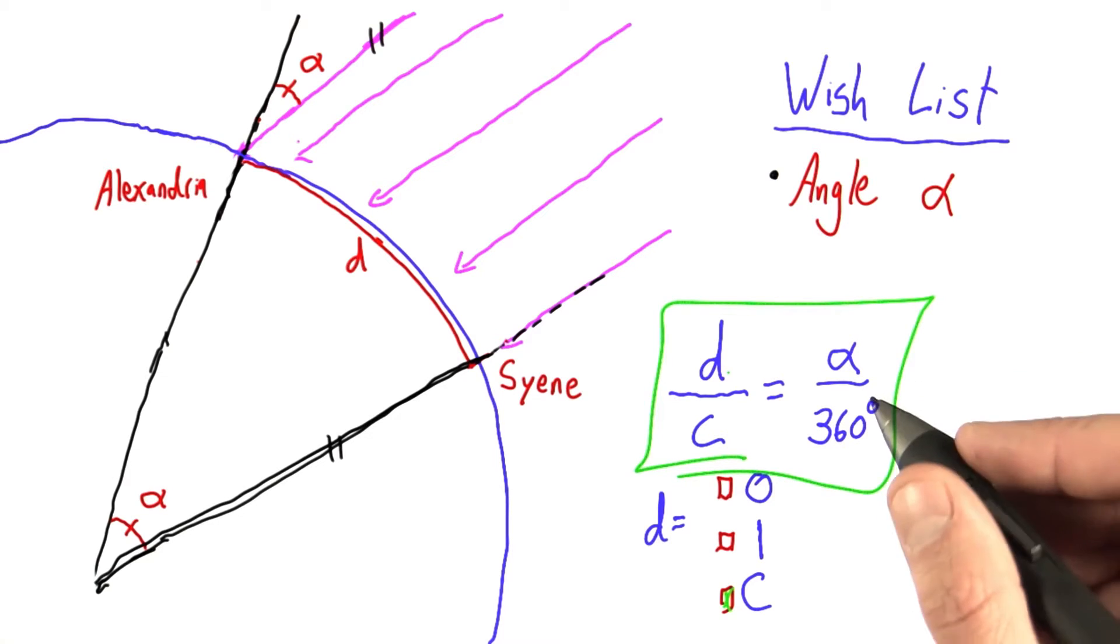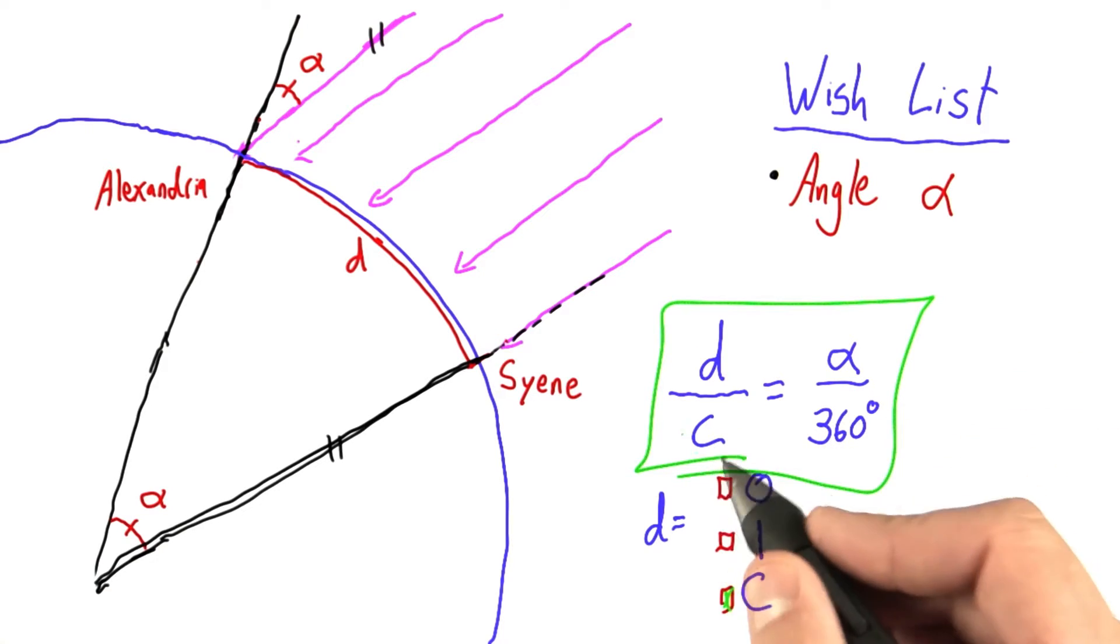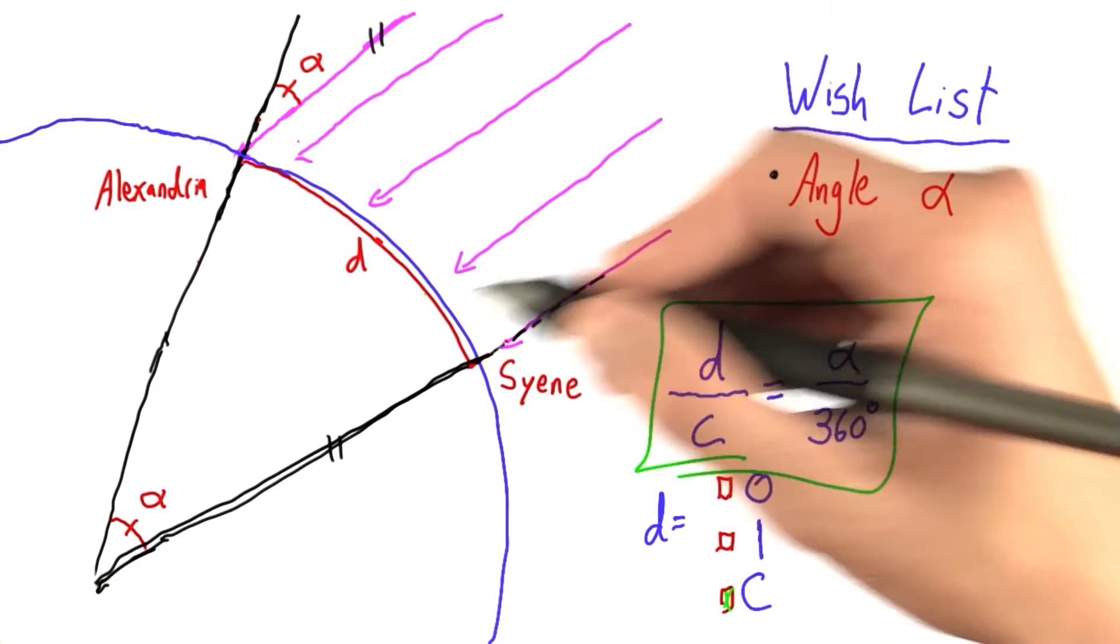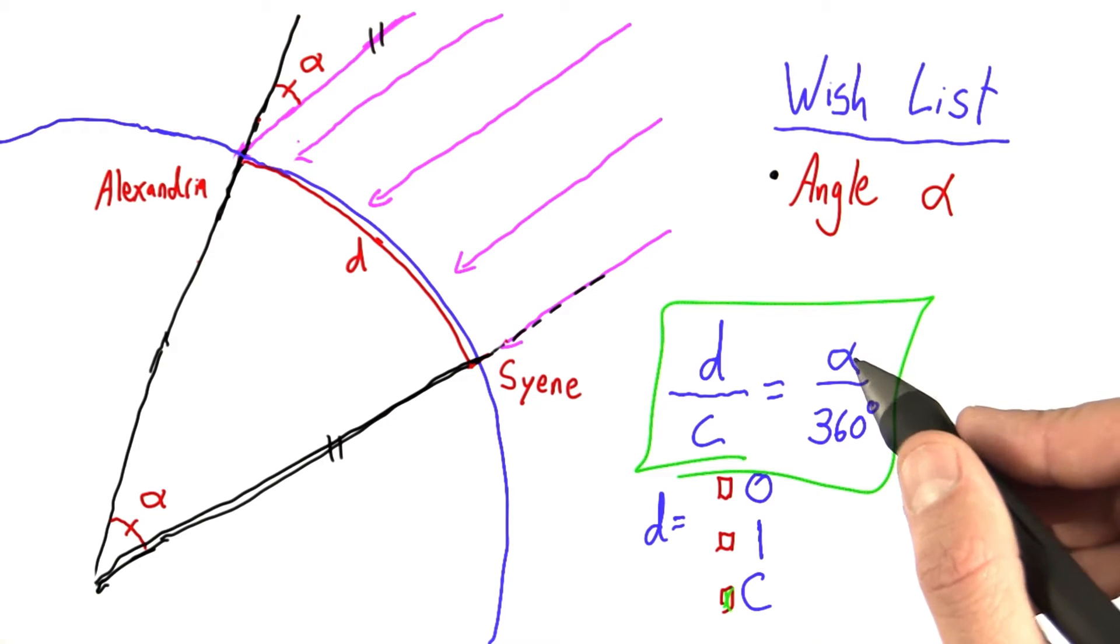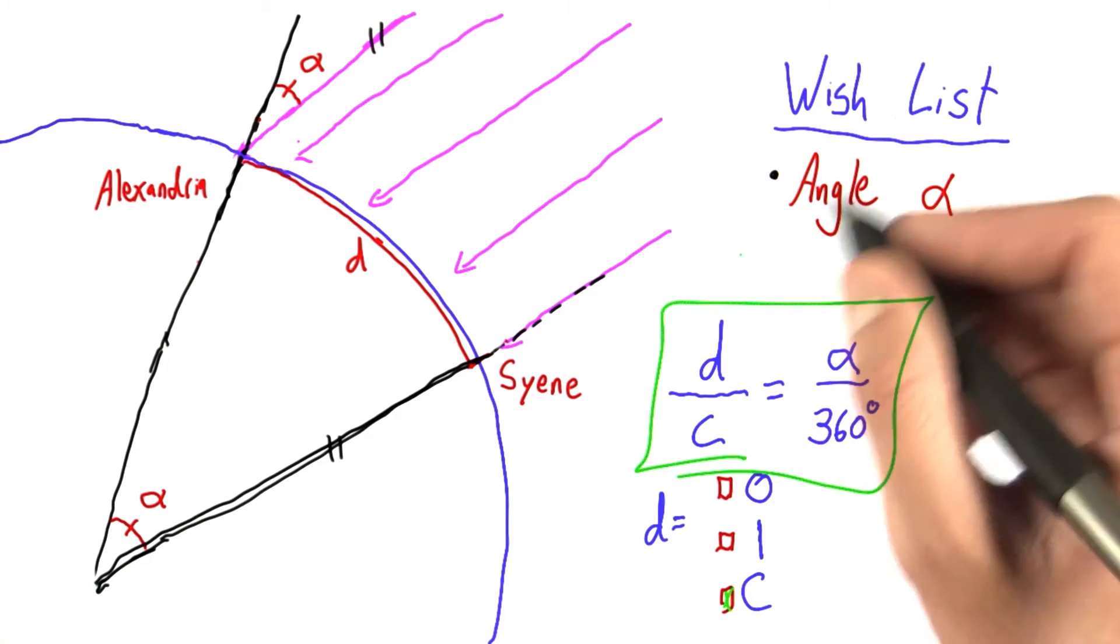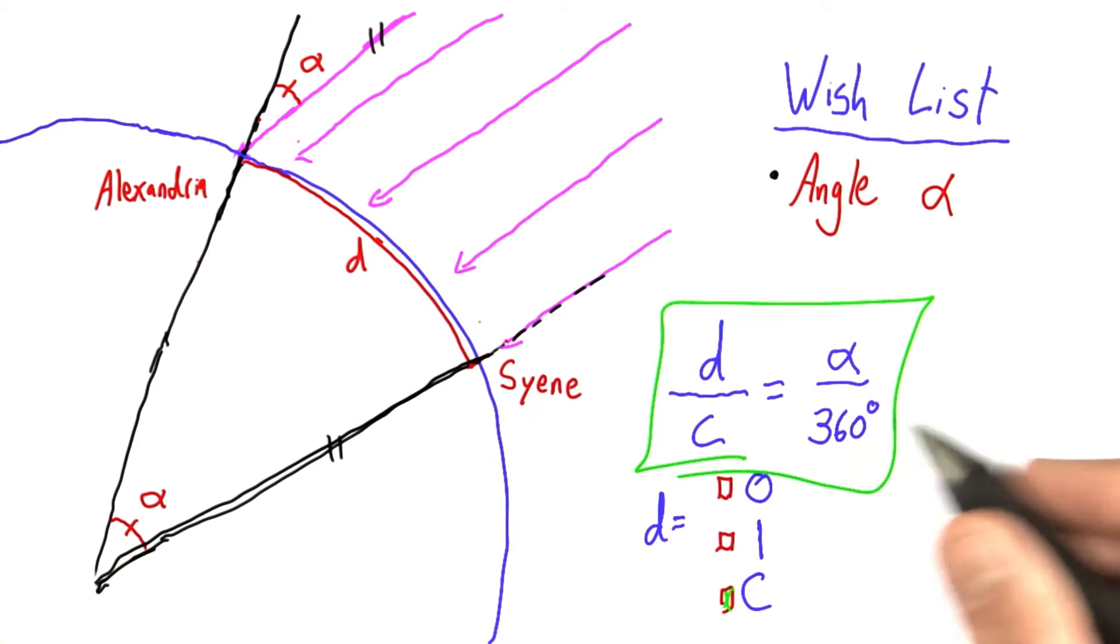Now we're starting to see an equation emerge. This circumference somehow depends on this distance and this angle, alpha. I guess we'll have to add the distance to our wish list because we don't know that yet either.